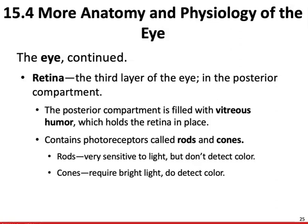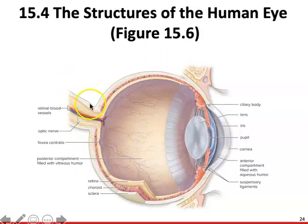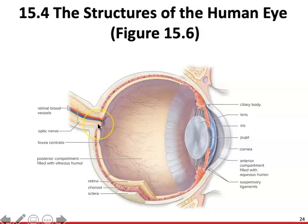The optic nerve is also found inside the internal retina region. The optic nerve is made of sensory fibers from the retina and takes all of those nerve signals to the visual cortex in the occipital lobe. The portion of the eyeball where the optic nerve exits is also known as the blind spot because there are no photopigments in that area.